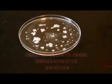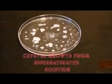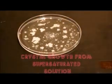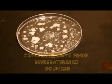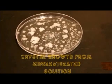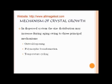Here is a video of a supersaturated salt solution in which nuclei are formed and eventually crystal growth takes place. In dispersed systems, the size distribution may increase during aging owing to three principal mechanisms — that is, the size of the particle may increase during storage of the product. The three mechanisms are: Ostwald ripening, polymorphic transformations, and temperature cycling.